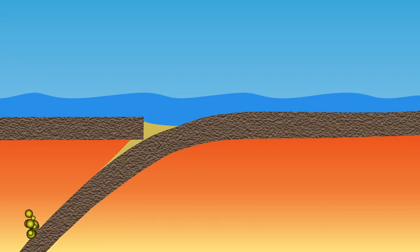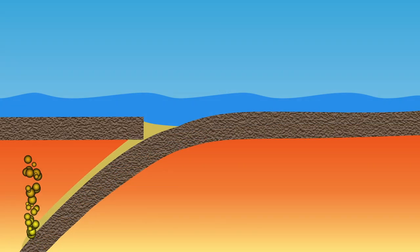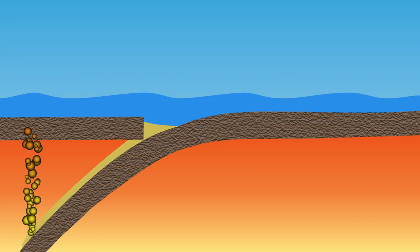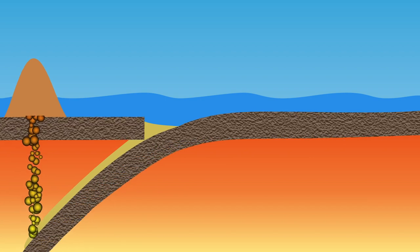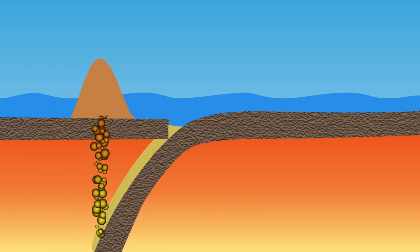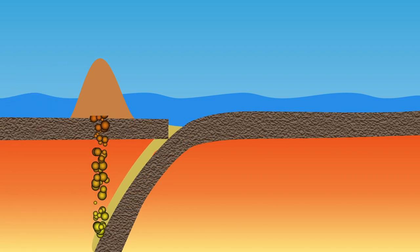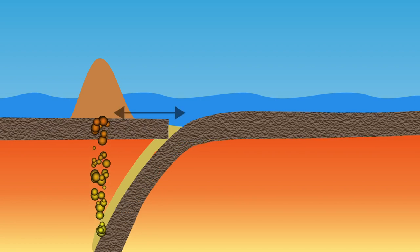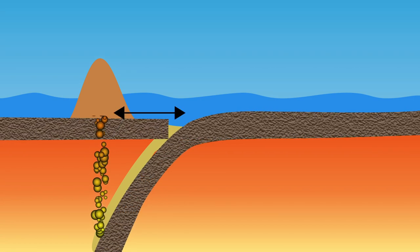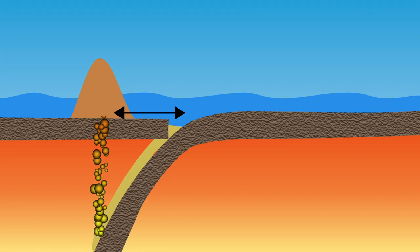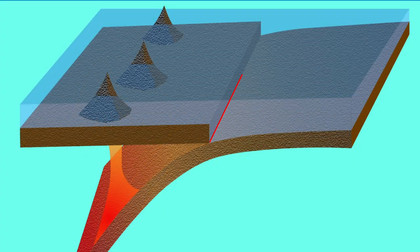The distance from the volcano to the trench is determined by the age of the diving plate. The older the diving plate, the heavier and steeper it dives down. As a result, the plate melts closer to the trench, so the horizontal distance between the trench and the volcanoes is not very large. In short, parallel to the deep sea trench, a row of stratovolcanoes is created.